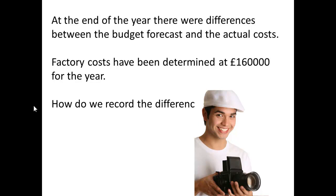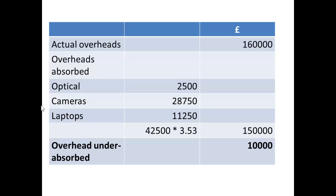At the end of the year, we find that there are some differences between the budget forecast and the actual costs. The actual overhead was £160,000 per year. We need to think about recording the difference. The direct labour hours were 2,500 for optical instruments, 28,750 for cameras, 1,250 for laptops, which gave us 42,500. We multiply this by £3.53, the absorption rate per direct labour hour, and we get £150,000. We take the difference between the actual and the budgeted, and we find a difference of £10,000. The actual is £10,000 greater, which means that we have under-absorbed.